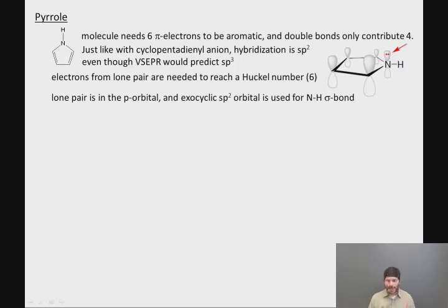Here's a picture of the lone pair on the nitrogen in a p orbital contributing two electrons to the electron count, and the electrons in the exocyclic sp2 orbital are used to form the NH sigma bond. Notice that pyrrole has an NH sigma bond, whereas pyridine did not.